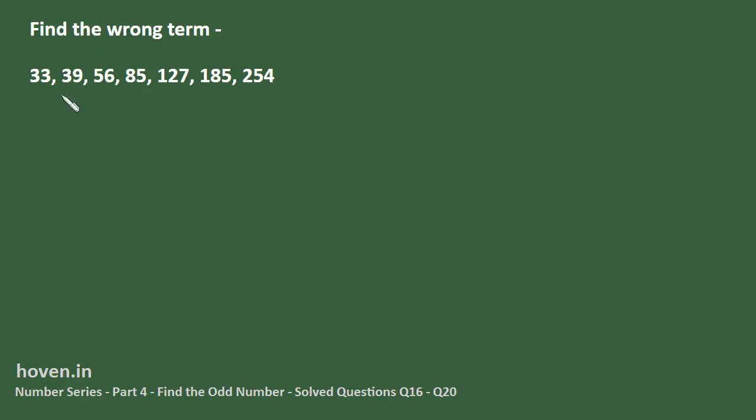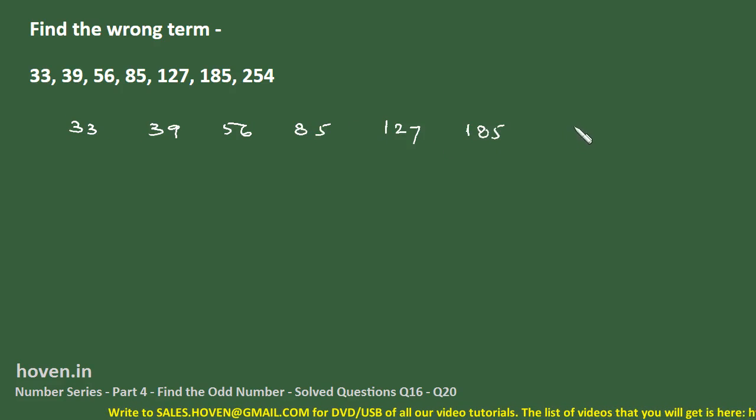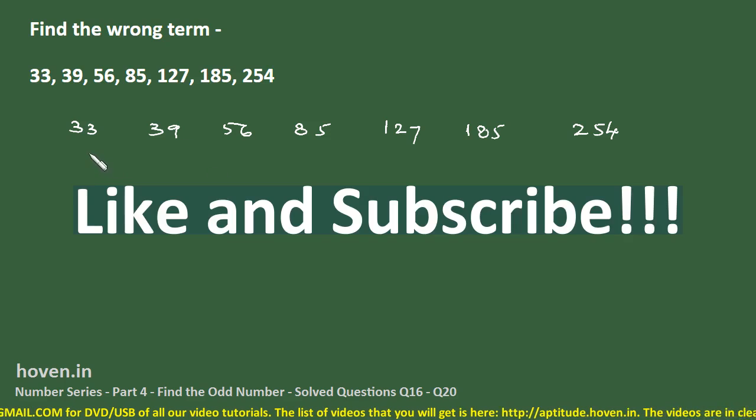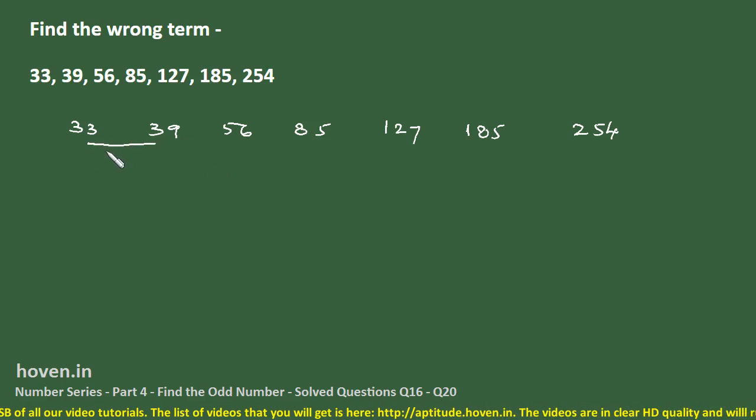Find the wrong term in this series: 33, 39, 56, 85, 127, 185, 254. What we will do is, let us first of all write them separately here. We have to find a relation from one term to the next. What a good starting point is, that you write the differences first of all.